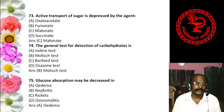Question 51: Oxidation of galactose with concentrated nitric acid yields — Mucic acid, Glucuronic acid, Saccharic acid, or Gluconic acid. The answer is mucic acid — oxidation of galactose gives mucic acid.